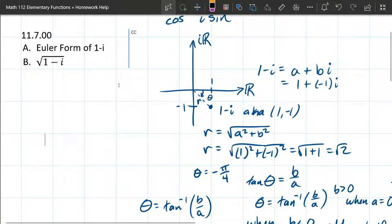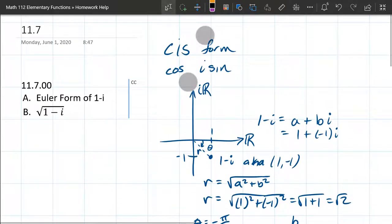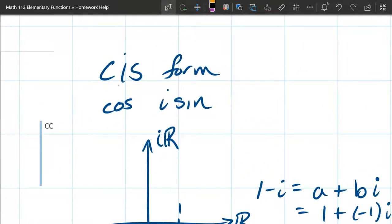So we just looked at how to convert coordinates. Now we're going to actually look at the different forms here. So I mentioned CIS form, cosine i sine.